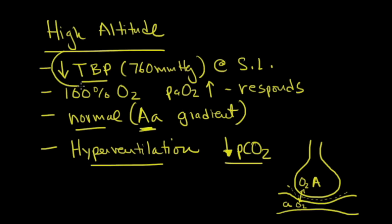So again, high altitude is a result of total barometric pressure going down. It responds to 100% oxygen. The PaO2 goes up. When you put someone on 100% oxygen in this case, it does respond. The AA gradient is normal and the body's response to this is to hyperventilate. This is why you see people hyperventilating at high altitude. It's to get their PaO2 up.